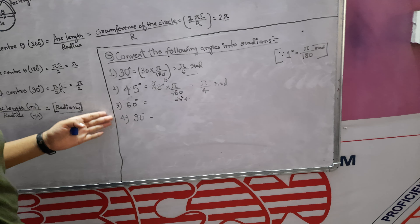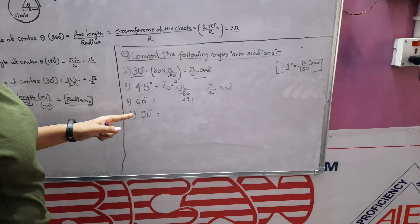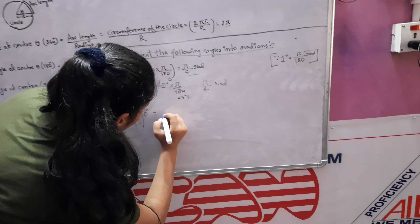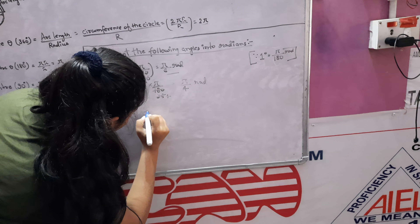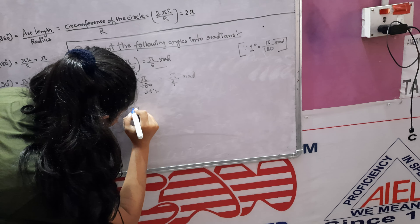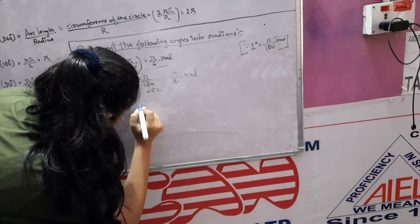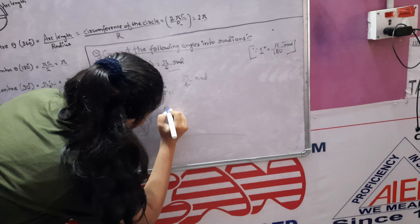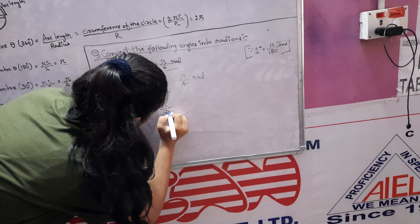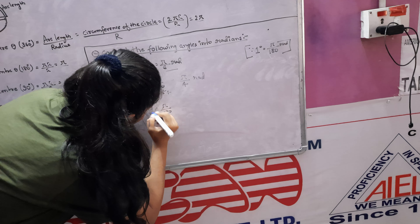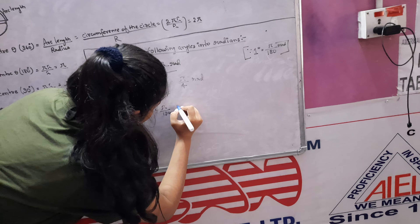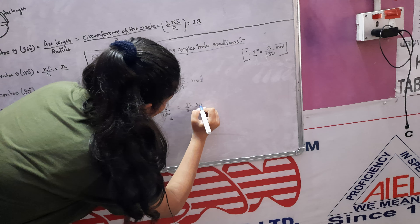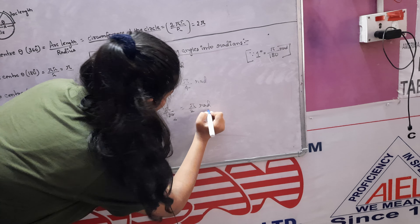Likewise you can do 60 degrees and 90 degrees. Let's find 90 degrees: 90 into π/180. Cancelling out, we are left with π/2 radians.